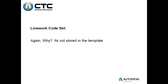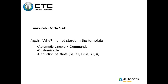Linework code set. What is it? It's a list of commands that tell what to do to the line. It's stored outside the drawing and template, but we need it to tell our figure prefix database what to do. While the figure prefix tells us color and line type, the linework code set tells us what to do to the line: start a curve, offset it, extend it, recall another point. It helps with linework commands and is customizable.